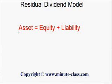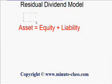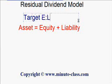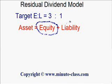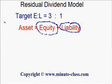Usually a company will set the so-called target equity-to-liability ratio. For example, it can be 3 to 1. It means that they always want to make sure that the equity is 3 times the liabilities. And don't forget that this means that the assets will be 4 times the liability.